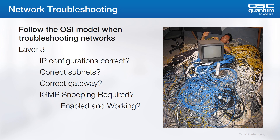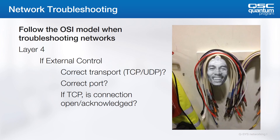If we're dealing with external control protocols, we should confirm that the right type of socket is being opened and that the port numbers are correct. If TCP is being used, you should be able to tell if the connection is open. If not, you've got a problem. If the connection is open, maybe the formatting of the data that you're sending is the issue, rather than the network at all.